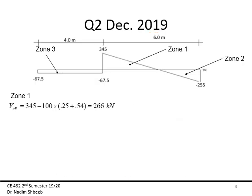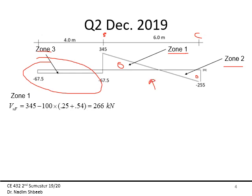Starting part one of the question: I divided the shear diagram into three zones — Zone 1, Zone 2, and Zone 3. Since the question asks for design of part BC, I will be working with that portion of the shear diagram. Zone 1 corresponds to the region near the larger reaction.